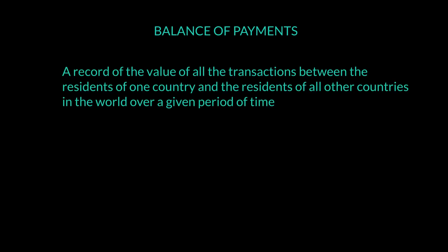Balance of payment is our last discussion of the international trade chapter, and it's an important discussion. Balance of payment is simply an account that records all the transactions taking place internationally for a country. The formal definition is that it records all the value of transactions between the residents of one country and the residents of all other countries in the world over a given period of time, typically on an annual basis.